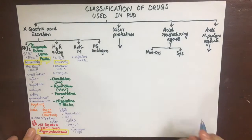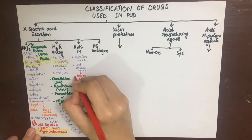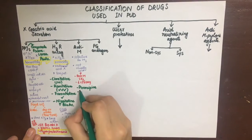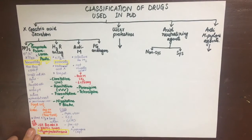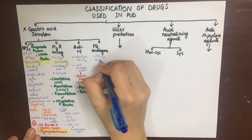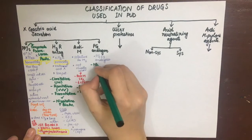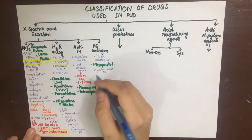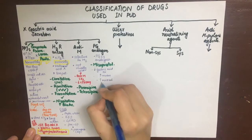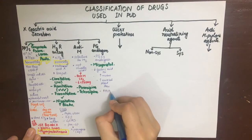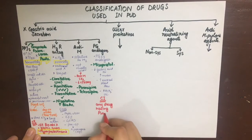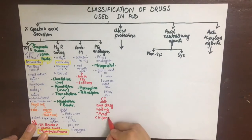Anti-muscarinic agents are specifically selective for M1 and are not usually used because they have decreased efficacy and serious atropine-like side effects. Chief drugs are pirenzepine and telenzepine. Prostaglandin analogues such as misoprostol — a PGE1 analog — inhibit gastric acid secretion, increase mucus secretion, increase bicarbonate secretion, and increase mucosal blood flow, so it has a cytoprotective effect. Any drug with 'prost' in its name is a prostaglandin analog and is contraindicated in pregnancy because it causes uterine contraction and abortion.